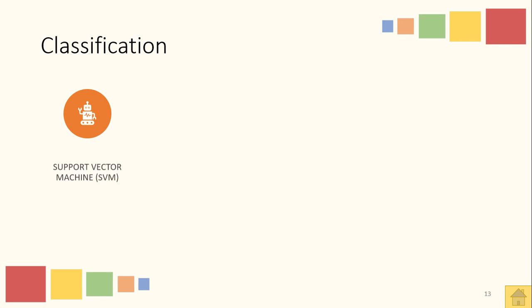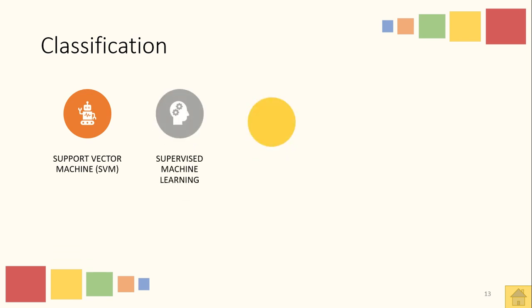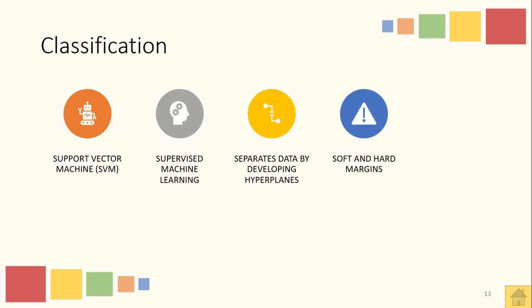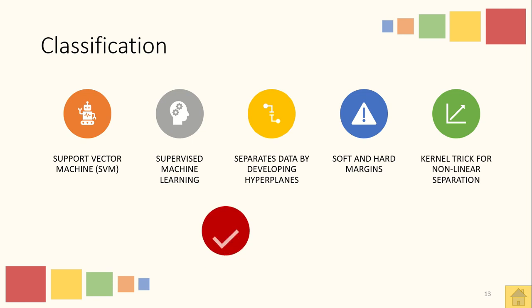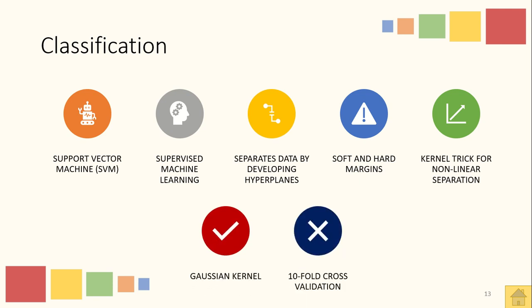The classification was carried out upon the chosen feature set comprising the three features mentioned. The classifier selected for this study is support vector machines (SVM), which is a type of supervised machine learning that separates data by developing hyperplanes with soft or hard margins depending upon the kernel selected. For this study, the Gaussian kernel was selected, and validation was carried out using 10-fold cross validation.